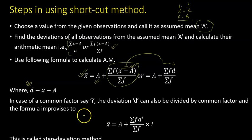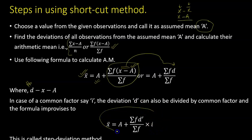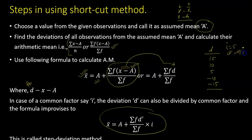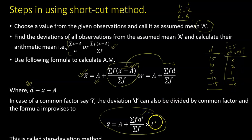We can also involve the step deviation method. If there is a common factor in the d values, we divide all the d values by that common factor i, and the formula gets modified accordingly. For example, if d values are 15, 10, 5, −10, −15, there is a common factor of 5, so i=5. Then d-dash equals d divided by i: 15/5=3, 10/5=2, 5/5=1, and so on. Later, you multiply back by the common factor i=5.